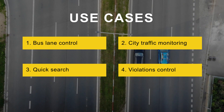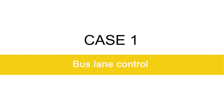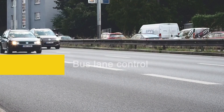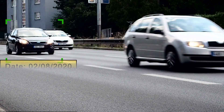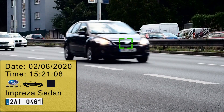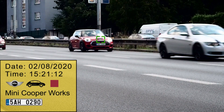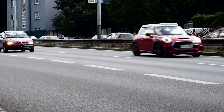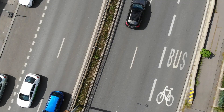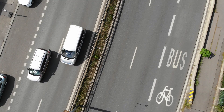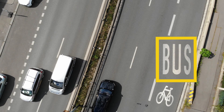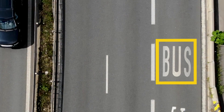Let's learn the first two cases. Case 1: Bus Lane Control. With Traffic Camera, you can capture violators on a public transport lane for buses and send data to a police database.